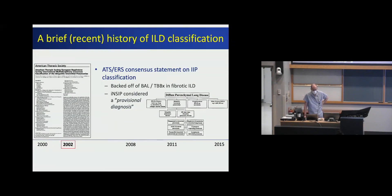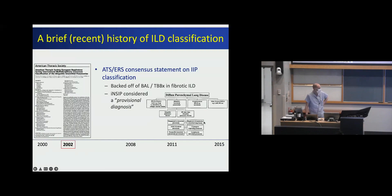In 2002, a broader document looked at idiopathic interstitial pneumonias, or IIPs, which suggested that bronchoalveolar lavage and transbronchial biopsies were less helpful in fibrotic ILD, added idiopathic nonspecific interstitial pneumonia as a provisional diagnosis, and produced a diagram providing an overarching approach to ILD classification covering idiopathic interstitial pneumonias, diffuse parenchymal lung diseases of known causes like drugs or connective tissue disease, granulomatous things like hypersensitivity pneumonitis, and some rare entities. We're still using this general approach today.